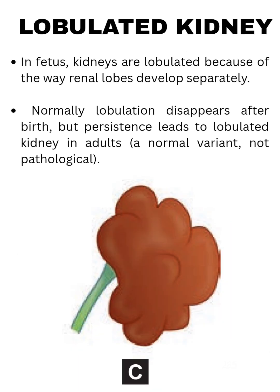Lobulated kidney: in the fetus, kidneys are lobulated because of the way renal lobes develop separately. Normally lobulation disappears after birth, but persistence leads to a lobulated kidney in adults — a normal variant, not pathological.